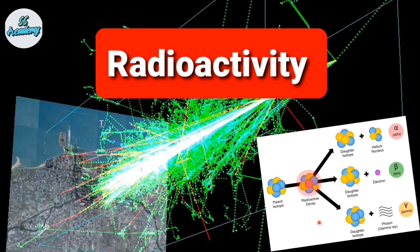Now going back to radioactivity — you have learned earlier that spontaneous disintegration of the atomic nuclei causing emission of ionizing radiations or particles and electromagnetic radiation is known as radioactivity. This property is possessed by some elements like uranium, plutonium, radium, thorium, radon, polonium, and radioisotopes like carbon and beryllium, etc.